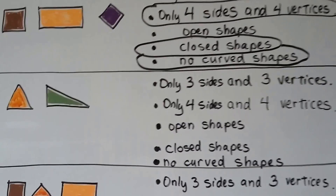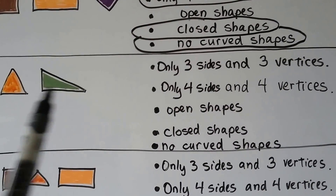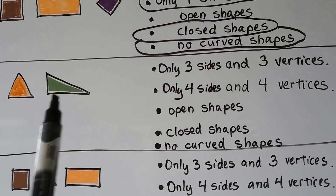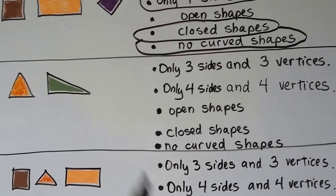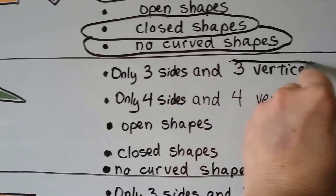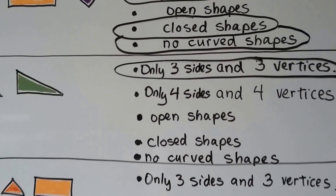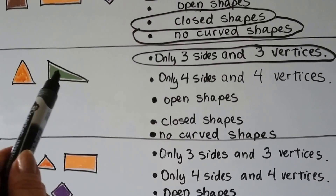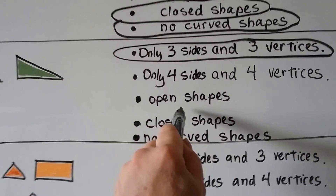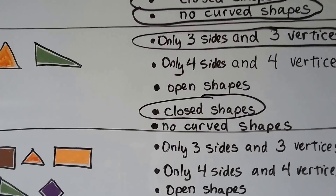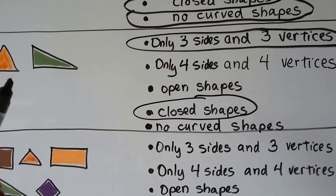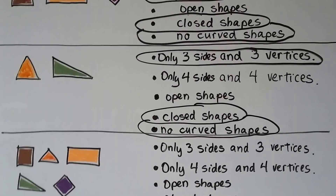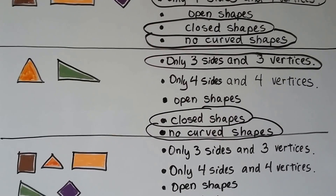What about the second group? Did she use three sides and three vertices? They have three sides and three vertices — so yes, she used that rule. They don't have four sides. Are they open? No, they look closed. Do they have curves? No curved shapes. So for the second group: three sides, closed, and no curved shapes.